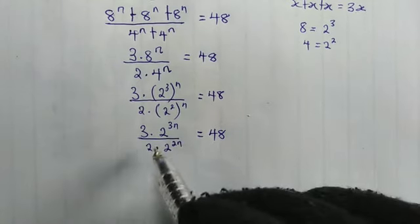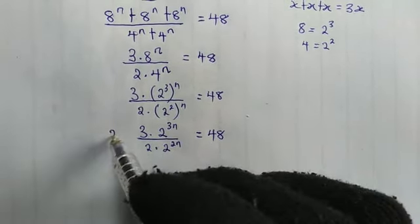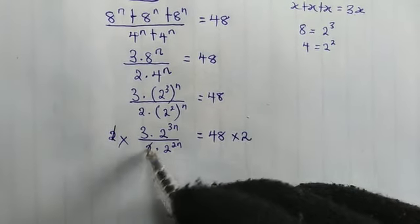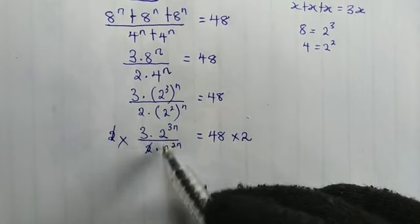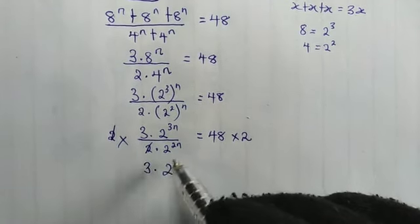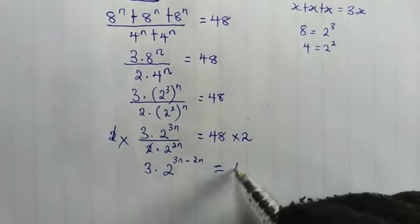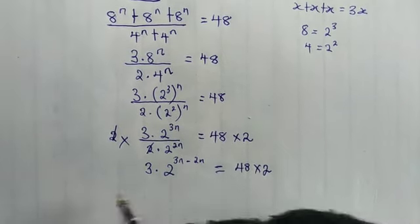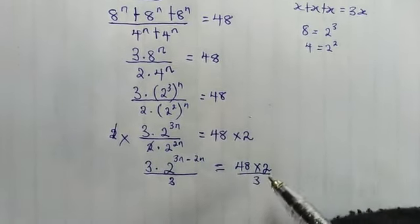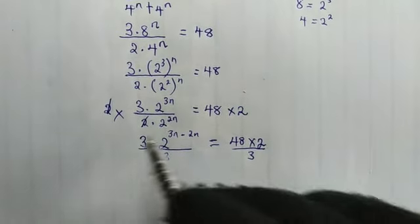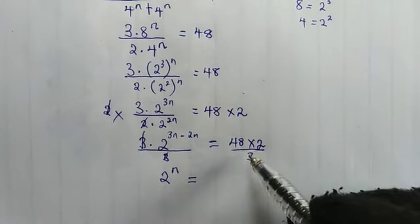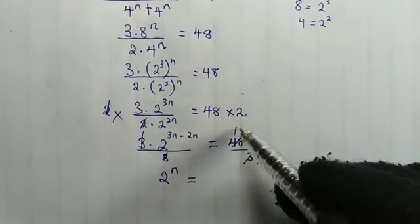We multiply both sides by 2, so the 2 in the denominator cancels out. With equal bases, we subtract the powers: 3 times 2^(3n minus 2n) equals 48 times 2. That gives 3 times 2^n equals 96. Dividing both sides by 3, the 3s cancel, and we have 2^n equals 32.